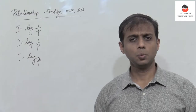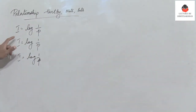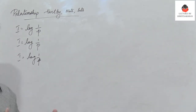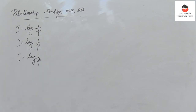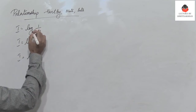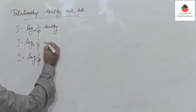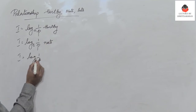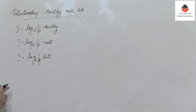In the first video segment we discussed the measure of information and defined self-information, which is equal to log(1/P), meaning information is inversely proportional to its probability of occurrence. Now, if we consider self-information I = log(1/P) to base 10, the units are Hartley. If it is to base e, the units are Nats, and if it is base 2, it is referred to as bits.